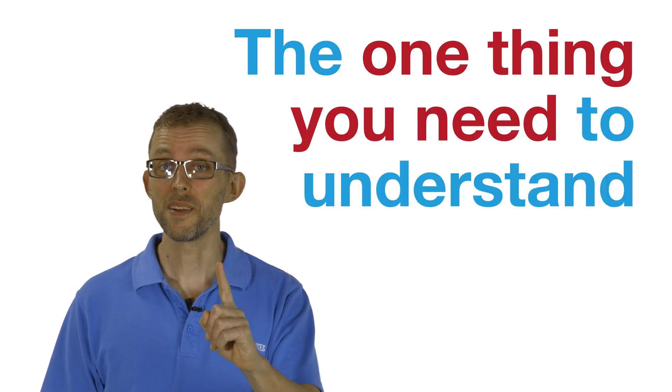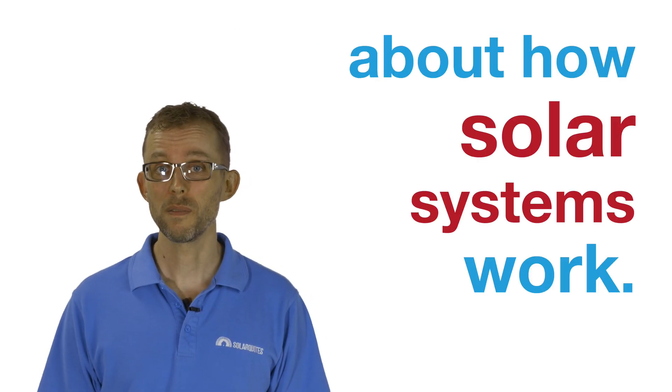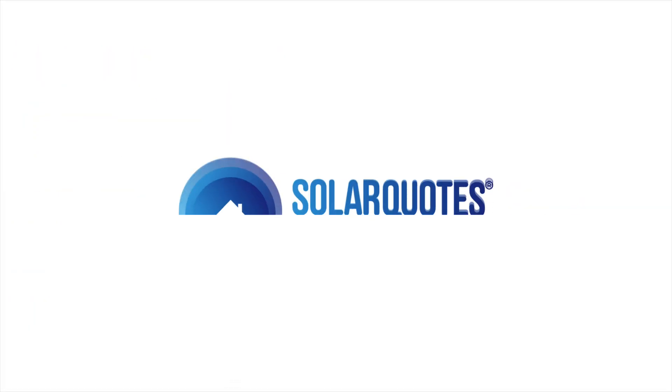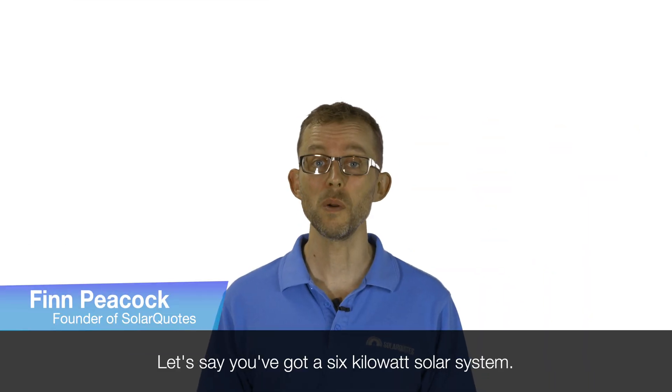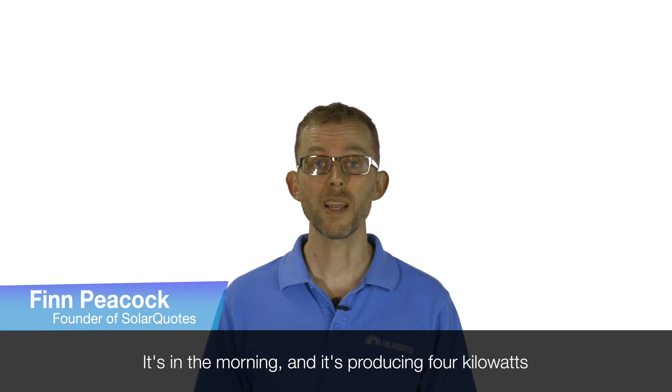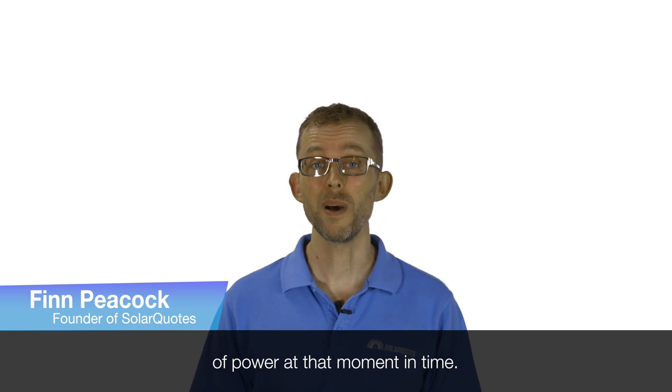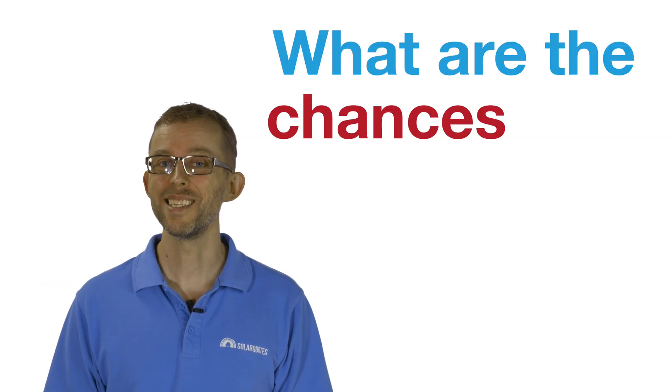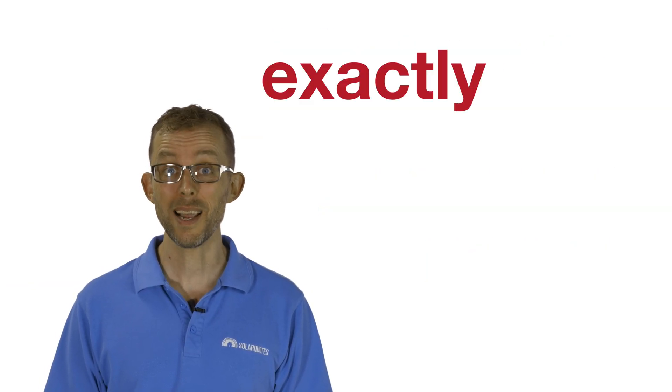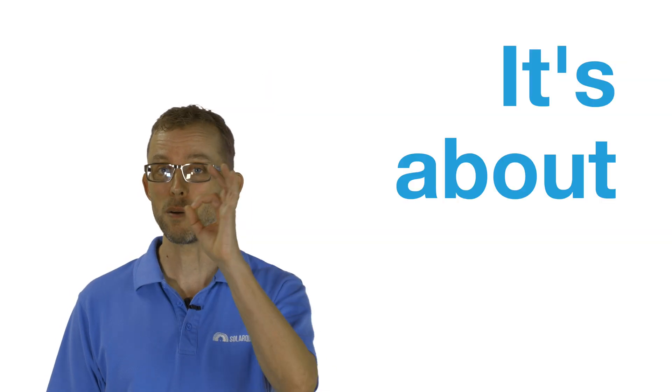The one thing you need to understand about how solar systems work: let's say you've got a six kilowatt solar system. It's in the morning and it's producing four kilowatts of power at that moment in time. What are the chances that your house needs exactly four kilowatts of power at the same moment in time? It's about zero.